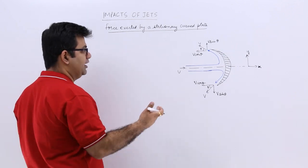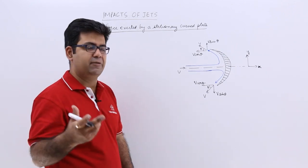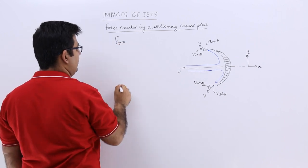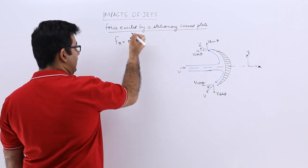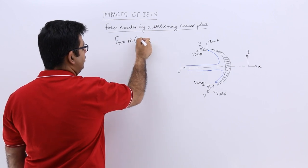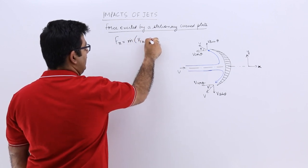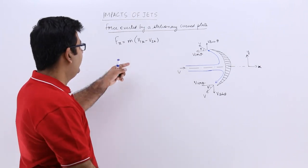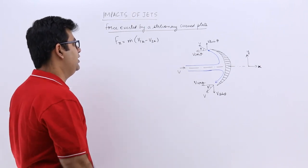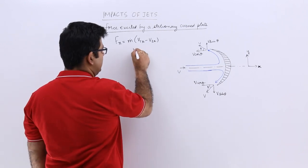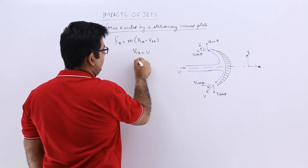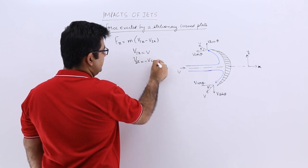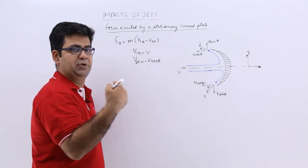So again the analysis is very simple. It will have two forces. It will have Fx which is equal to mass flow rate into the velocity initial in the x direction and the final velocity in the x direction. So the initial velocity in the x direction is v and the final velocity in the x direction is minus v cos theta. It is in the opposite direction.